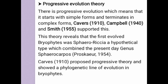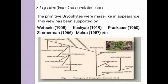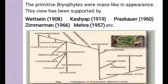The regressive or downgrade theory states that the primitive bryophytes were moss-like in appearance. This view has been supported by Watson in 1908, Kacheff in 1919, Prosker in 1960, Zimmermann in 1966, and Mahra in 1957. Here is the diagram of the phylogenetic lineage, which is the phylogeny of bryophytes given by Mahra in 1957.